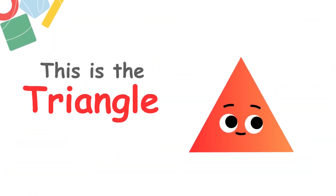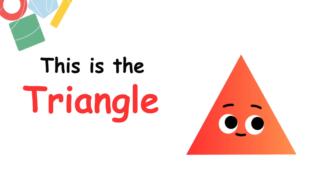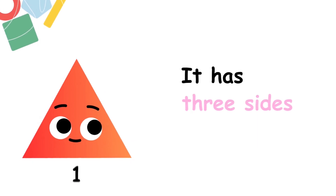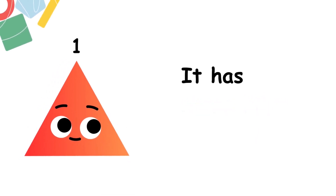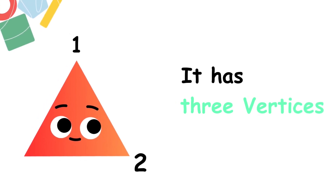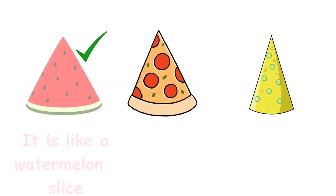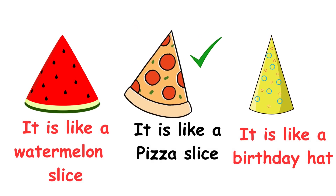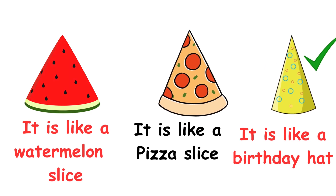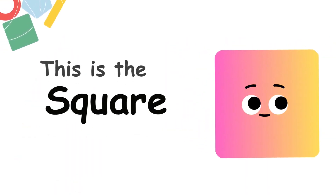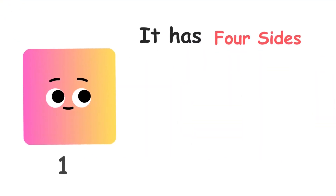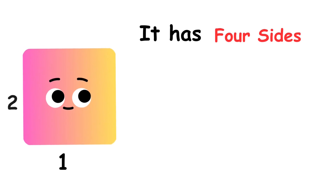This is the triangle. It has three sides — one, two, three — and three vertices — one, two, three. Its shape is similar to a slice of watermelon, a slice of pizza, and a birthday hat.